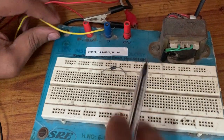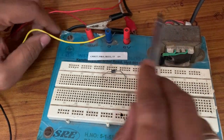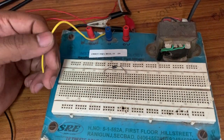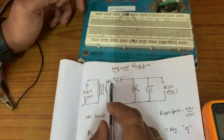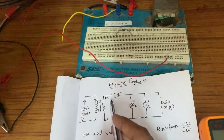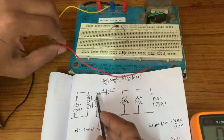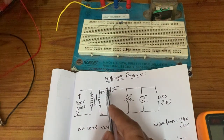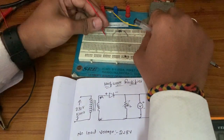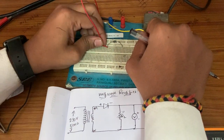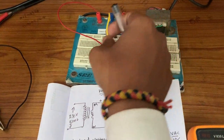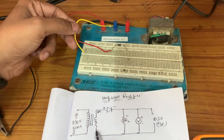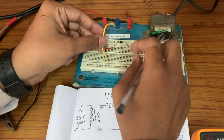This is the breadboard and this is the transformer — we are using a step-down transformer. In the circuit diagram, this transformer's first terminal is connected to the P-N junction diode P-type. So this transformer first terminal I am connecting to the P-type, connecting vertically. Now the transformer second terminal I am connecting to the ground — the transformer second terminal is connected to ground here.